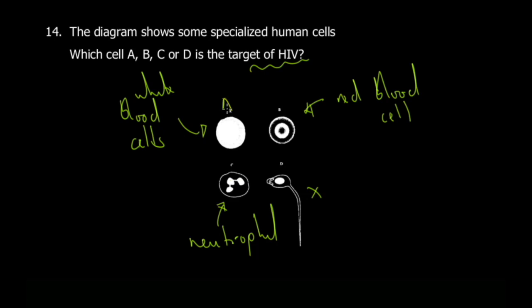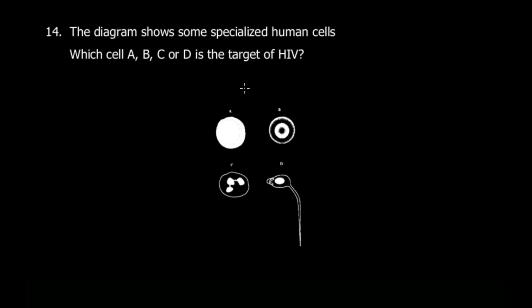It should be this one, the white blood cell. We'd actually choose A. Just to recap: we eliminated sperm because sperm is definitely not affected by HIV. We eliminated red blood cell because we know they're not affected. Neutrophil was close because it's also part of the defense mechanism in humans, but it's not affected by HIV generally. This one, the white blood cell, is what they were going for.